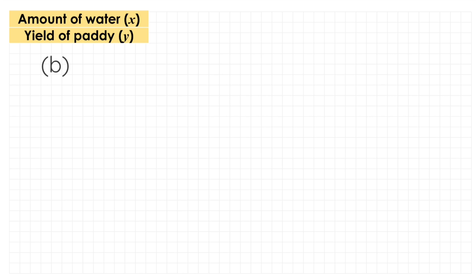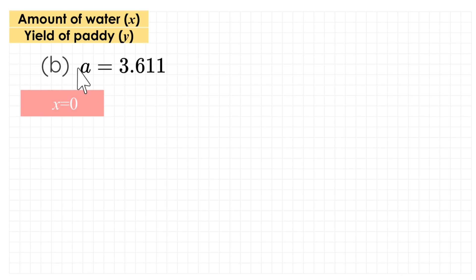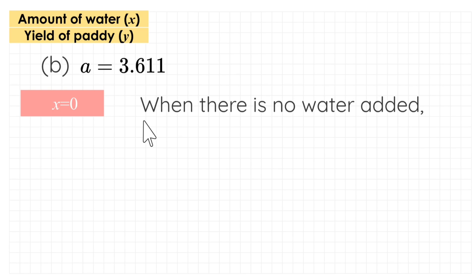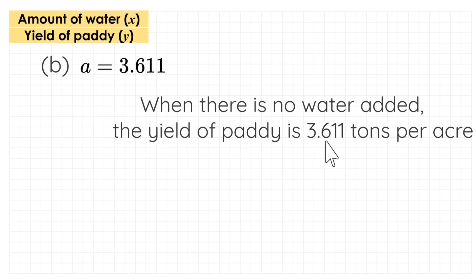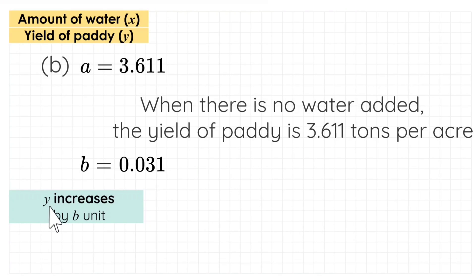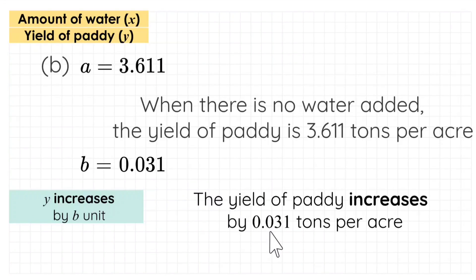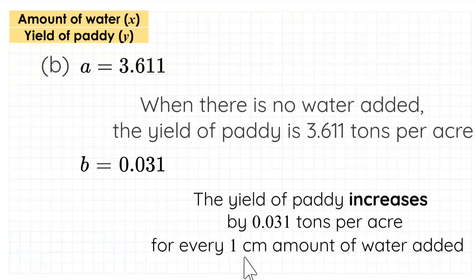For the second question, interpret the coefficients of the regression line. Coefficient a equals 3.611, which is the y-intercept. When x equals 0, meaning no water is added, y equals a, so the yield of paddy is 3.611 tons per acre. Coefficient b equals 0.031 is the gradient and it is positive, so the yield of paddy increases by 0.031 tons per acre for every one centimeter of water added.